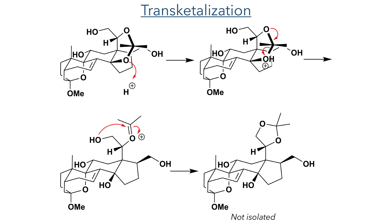As the next proposed step involved the selective reaction of one of the primary hydroxyl groups, the researchers first performed a trans-ketalization. This involved the hydrolysis of the strained six-membered acetal and the formation of a less strained five-membered acetal, formed by the attack of the primary hydroxyl group on the oxocarbenium produced by the acid hydrolysis.